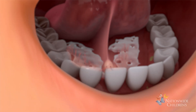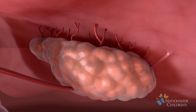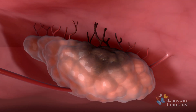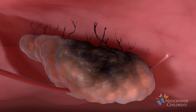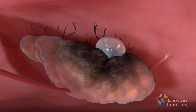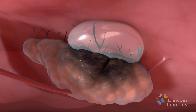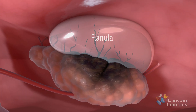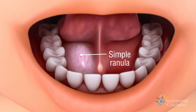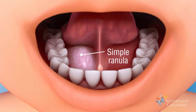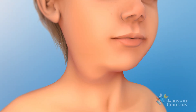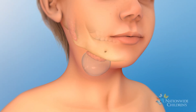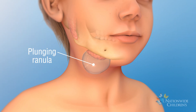Sometimes a salivary gland, usually the sublingual gland, may be injured or its ducts may become blocked. As a result, saliva can't get into the mouth. Instead, it leaks into the surrounding tissue, forming a ranula. A ranula is a saliva-filled bubble, or sac, that forms in the floor of the mouth. Simple ranulas stay under the tongue. If a ranula extends down into the neck, it's called a plunging ranula.